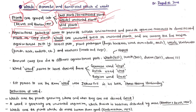Weeds are one among the five major agricultural pests. The five major agricultural pests are: insect pests; plant pathogens like fungi, bacteria, virus, nematodes, and MLOs (mycoplasma-like organisms); weeds; vertebrates like birds, rats, and rodents; and molluscs like snails and slugs. A pest is any organism that is affecting or reducing the yield or quality of crops.